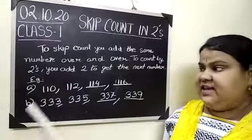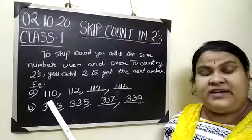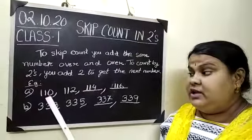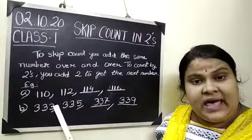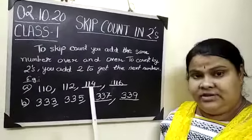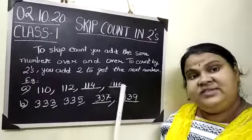Suppose you have 110. When you add 2 to it, it becomes 112. Again, by adding 2, you get 114. Again, by adding 2, it becomes 116.